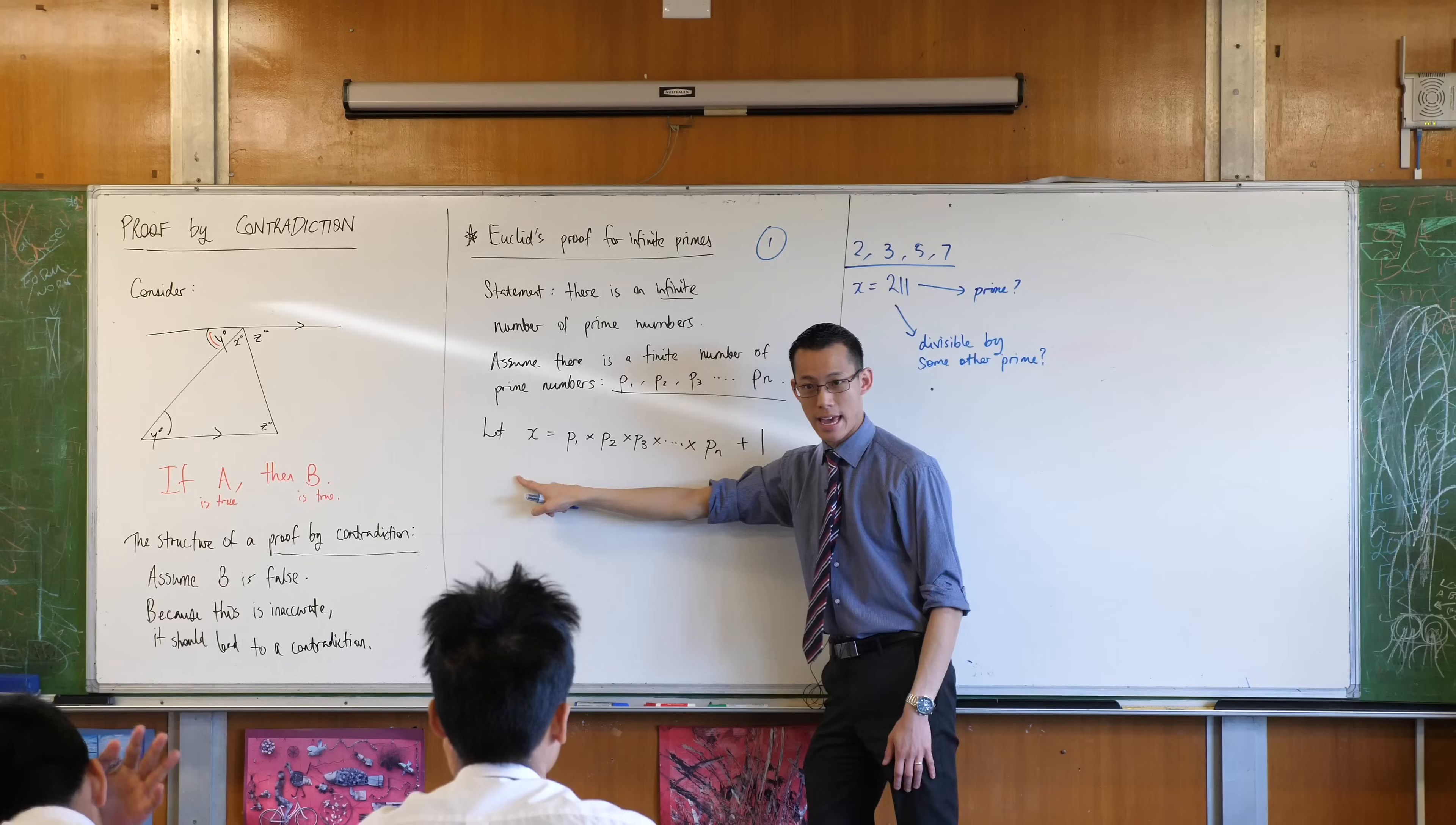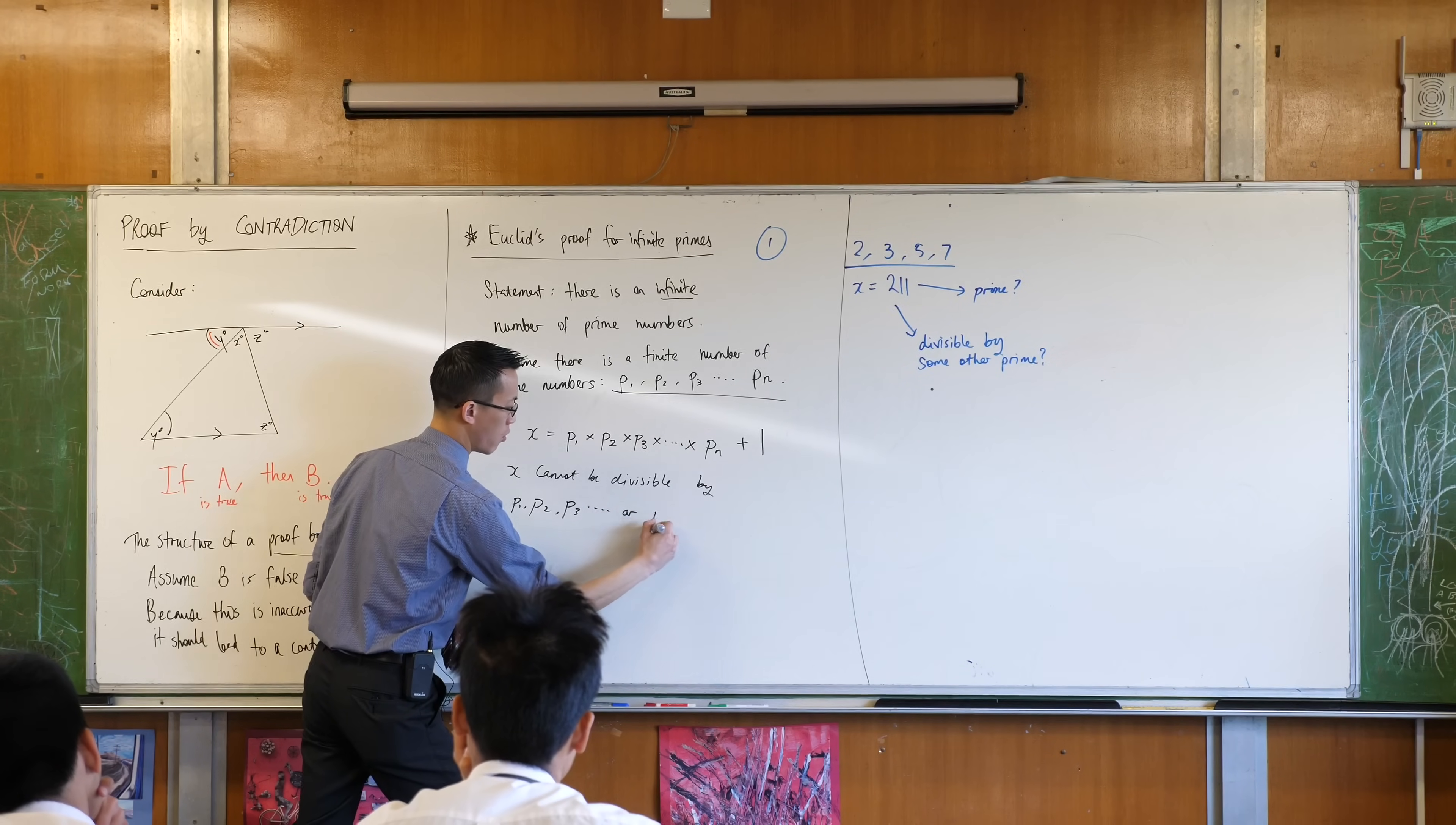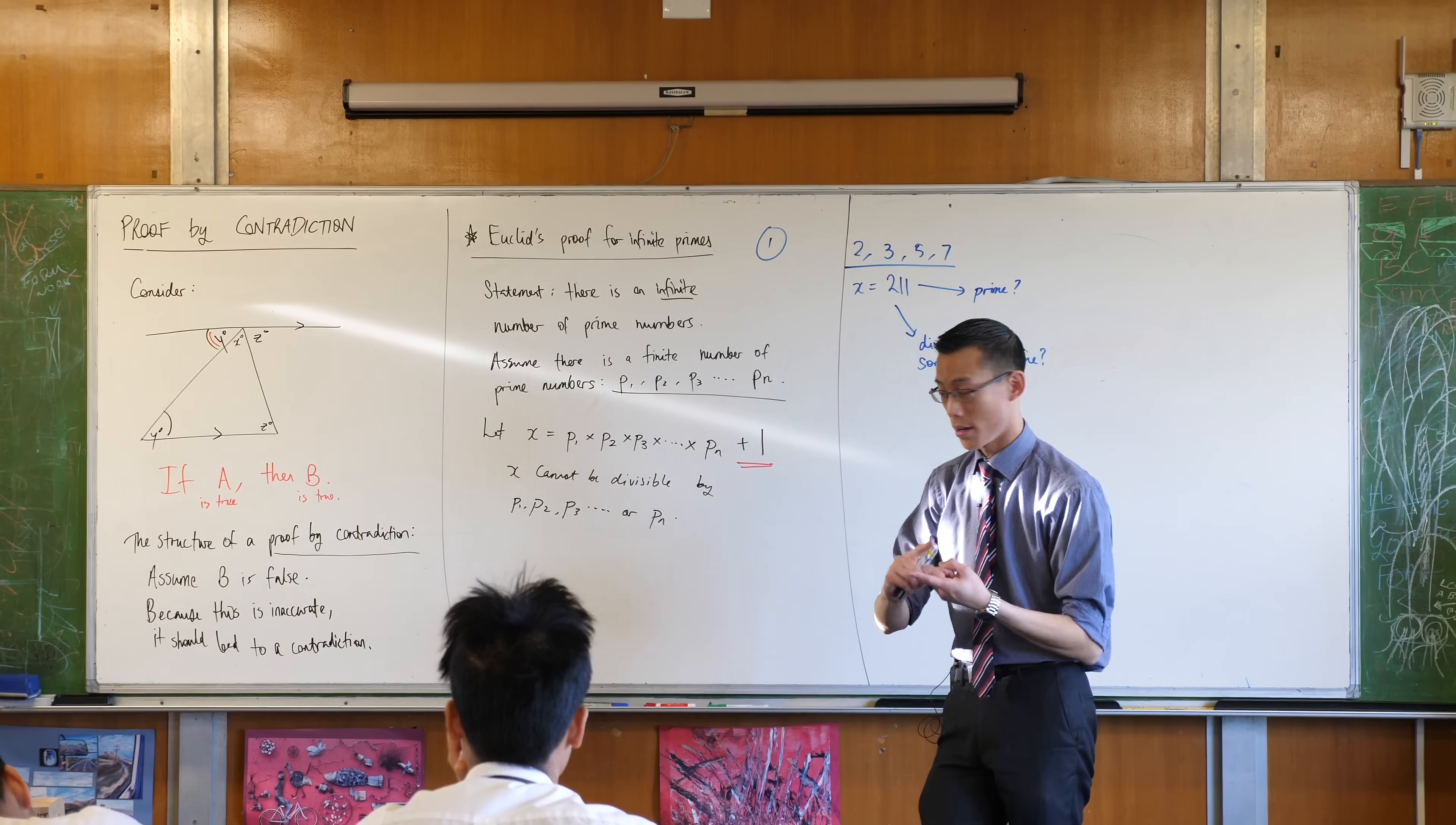So if this is what x is, how am I going to state this, right? x cannot be divisible by any of the numbers on this list. Cannot be divisible by p1, p2, p3, etc., or pn, right? And the reason why is this ingenious thing that Euclid did, he did this, right? That breaks the divisibility no matter what combination of numbers you put together, okay? That's why 211 can't be divisible by 2, 3, 5, or 7. And no matter how long this list is, I can always do this trick and come up with a new number that you always have a remainder of 1, right?